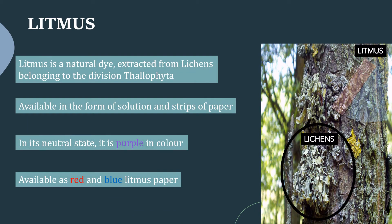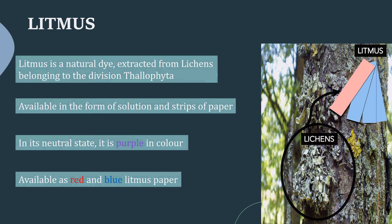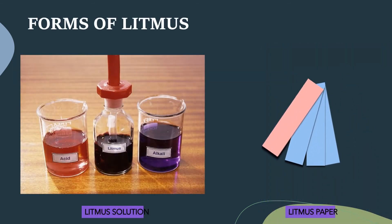Litmus is a natural dye extracted from lichen that grow on trees and rocks. It is available in the form of solution and strips of paper. In its neutral state, it is purple in color and available as red and blue litmus paper. The pictures here show us the red litmus solution, blue litmus solution, red litmus paper and blue litmus paper. These are the litmus indicators used to find whether the given solution is acidic or basic.